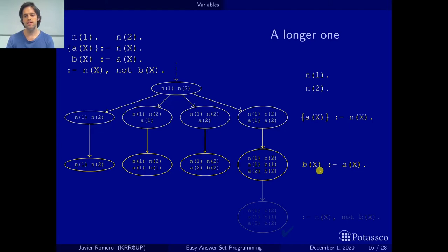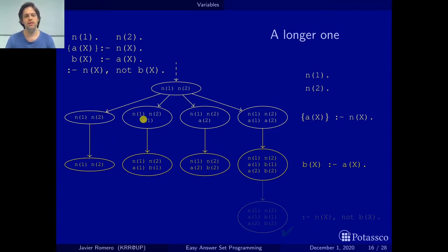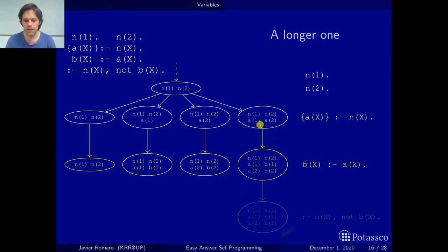Next we have the rule: for every x, if a(x) is in the set then b(x) is in the set. So whenever a(1) is in the set, b(1) must also be there, and whenever a(2) is in the set, b(2) must also be there. Where there is no a(1) or a(2), things stay the same. Where a(1) is present we add b(1), where a(2) is present we add b(2), and where both are present the rule applies for both.